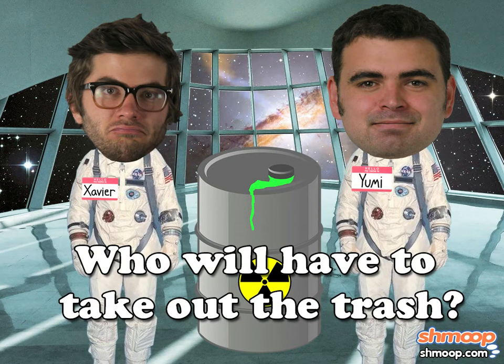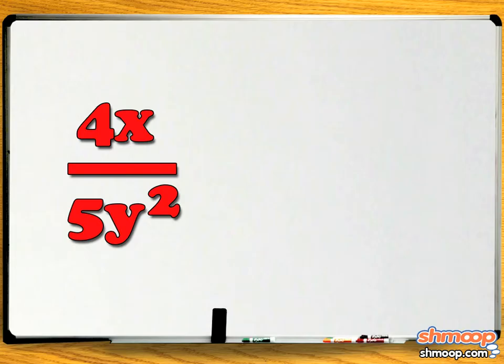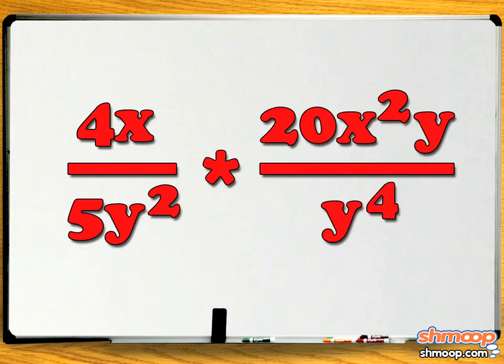Their dilemma is represented by the following: 4x over 5y squared times 20x squared y over y to the fourth.